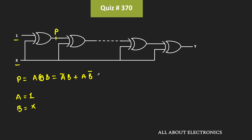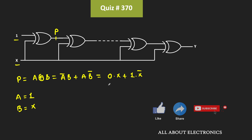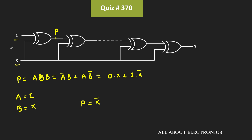That means P equals 0·X + 1·X̄. The first term is equal to 0, so P is equal to X̄. Whenever the inputs to an XOR gate are 1 and X, the output will be X̄ — in other words, this XOR gate acts as an inverter.